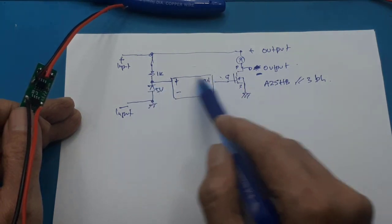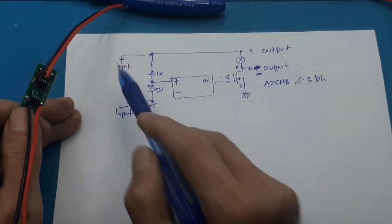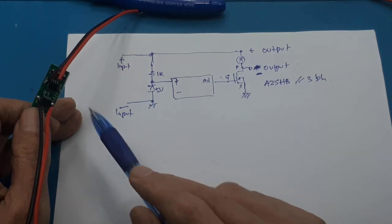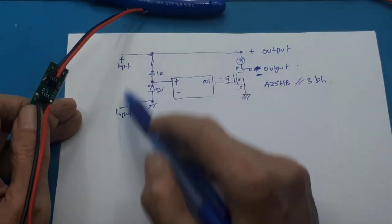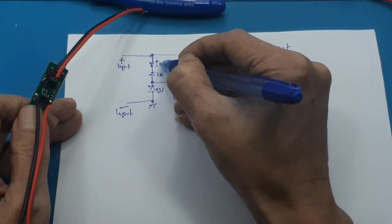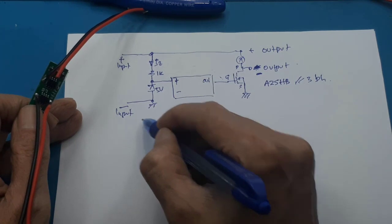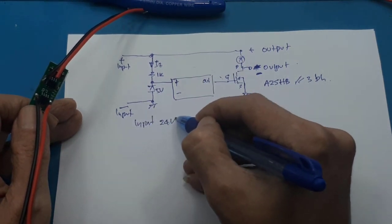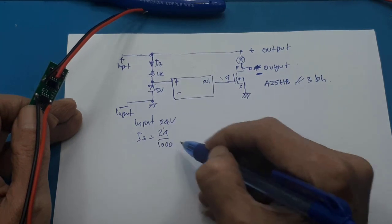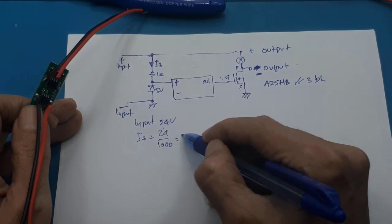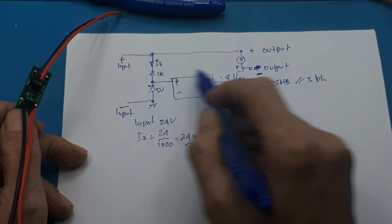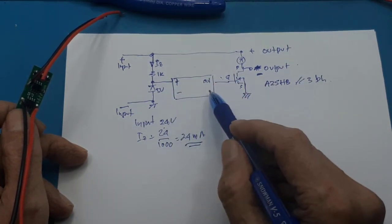Jadi dengan adanya zener ini, rangkaian ini bekerja pada tegangan 5 volt. Inputnya di sini sesuai spesifikasi bisa 24 volt. Kemarin ada yang tanya kenapa di 24 volt panas, tentu saja yang panas itu MOSFET-nya. Ini bila 24 volt saja, kalau kita hitung arusnya, kita sebut saja arus zener bila input 24 volt. Arus zener-nya tinggal kita bagi saja 24 dibagi 1 kilo, sekitar 24 mili ampere. Kecil bukan?